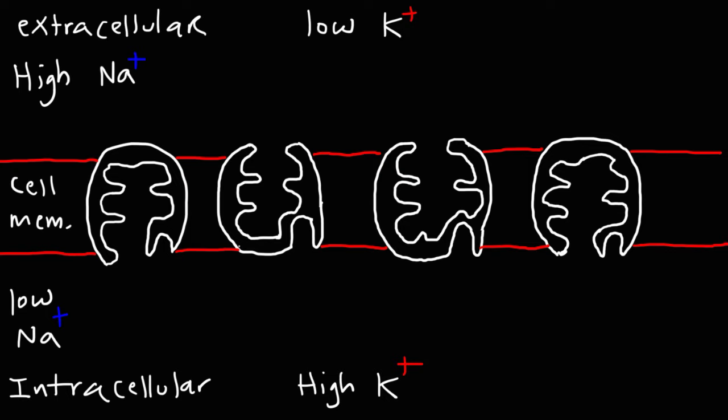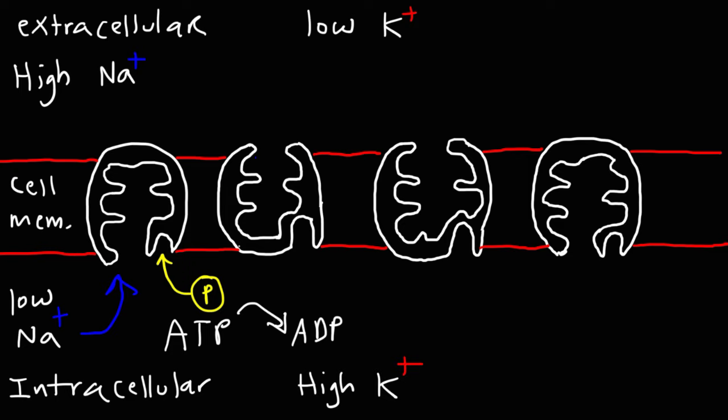The first thing that happens in the sodium-potassium pump is that three sodium ions will enter the pump. In addition, energy is needed. So ATP is going to convert to ADP, and it's going to phosphorylate the pump — activate it — transferring a phosphate group in the process. So right now, we're going to have three sodium ions and a phosphate group.